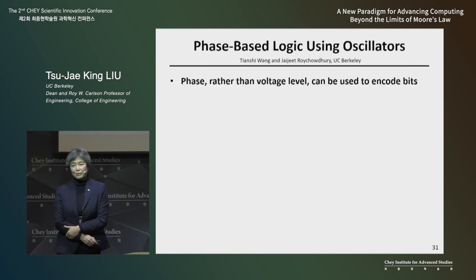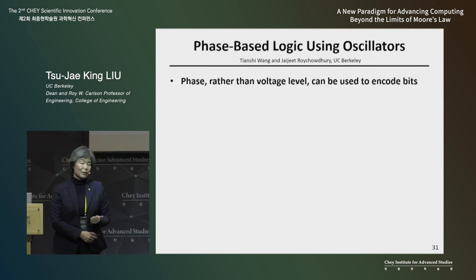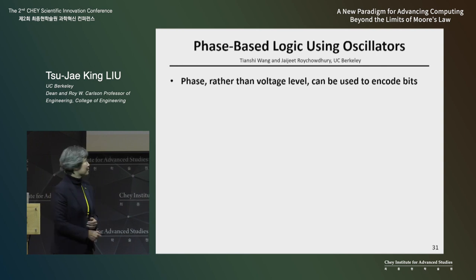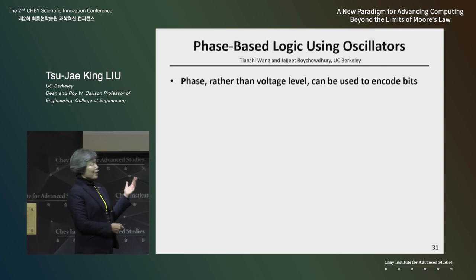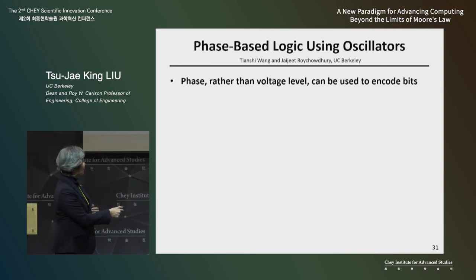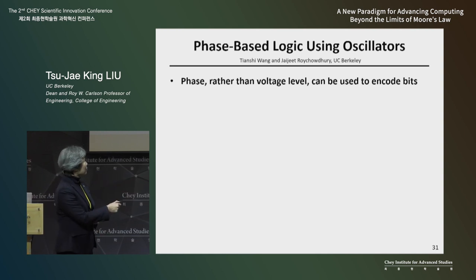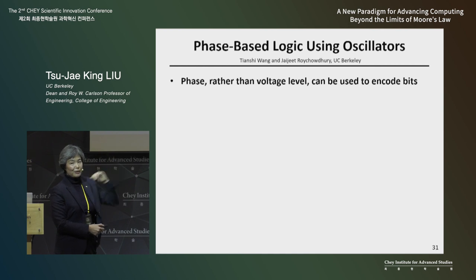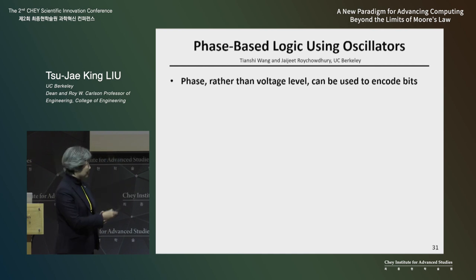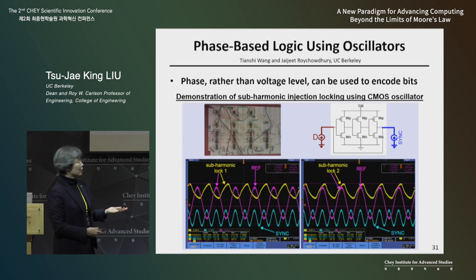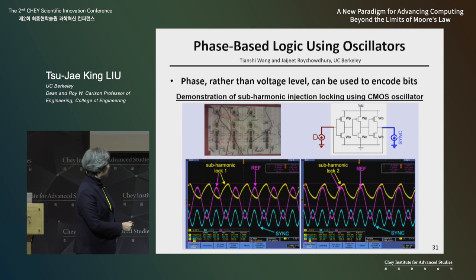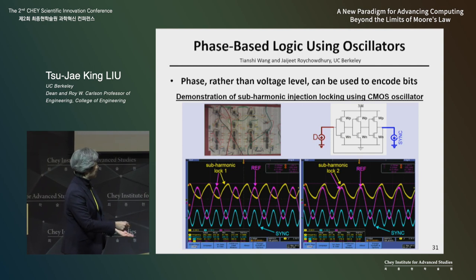The final example I wanted to mention is that we can encode information differently in a chip in the future. At UC Berkeley, Professor Roy Chowdhury has been working on this for more than 10 years. If we use phase rather than voltage levels — I talked about how CMOS works by storing high or low voltage for one and zero — another way you can encode information is in an oscillating signal, which is a voltage versus time plot.